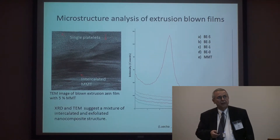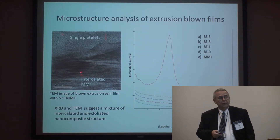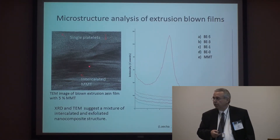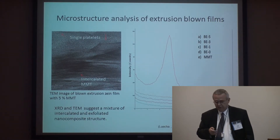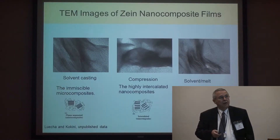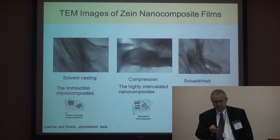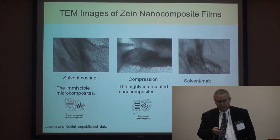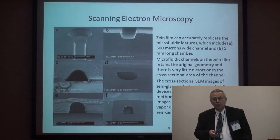In particular, with extrusion-blown films, that aggregation completely disappears. In some areas we have intercalated Montmorillonite clays, and in other areas essentially completely exfoliated nano-clays. These images show the different transmission electron microscopy views of these structures.